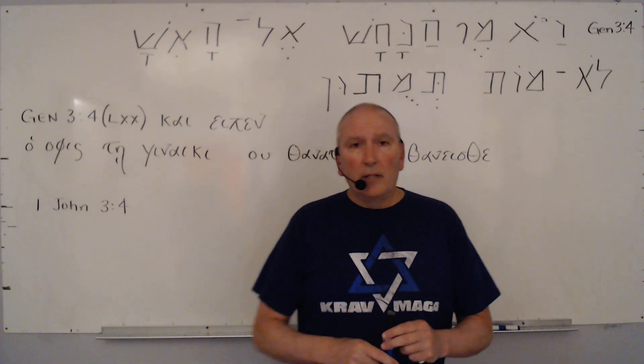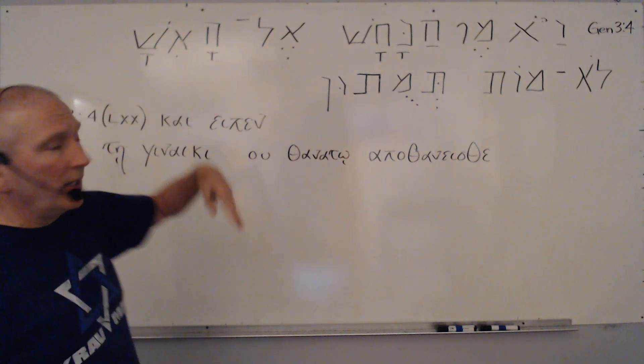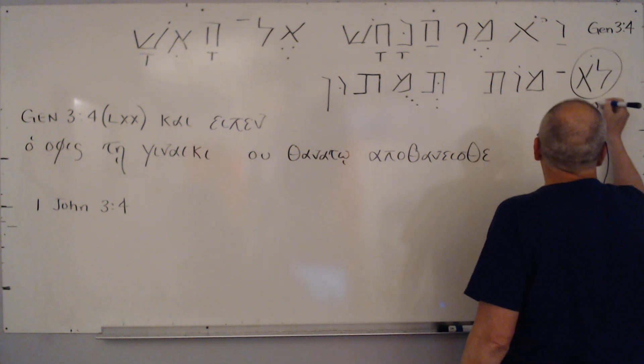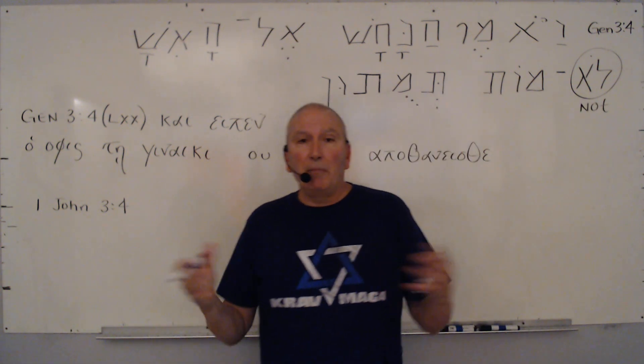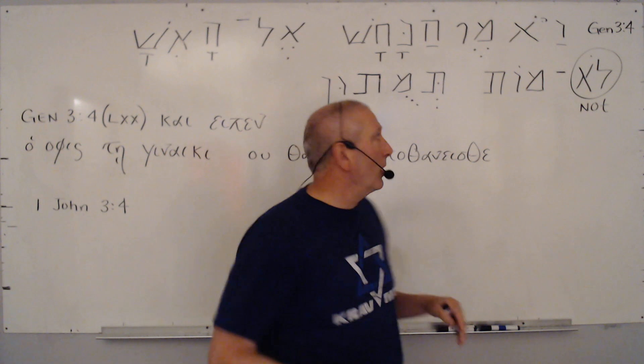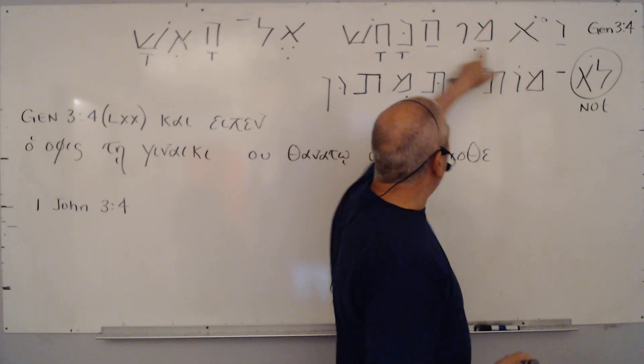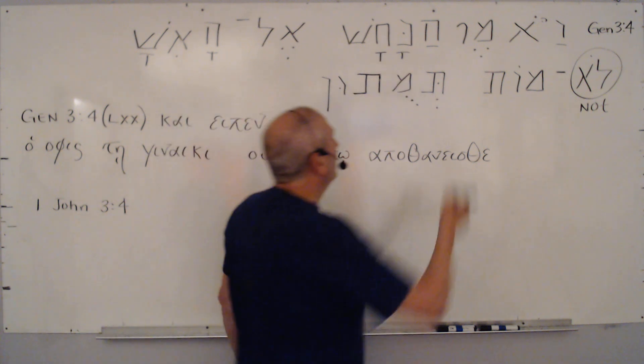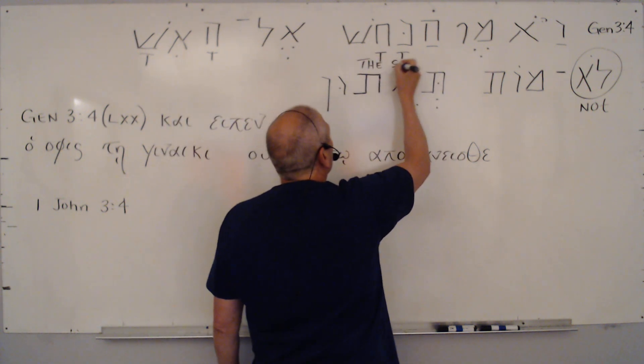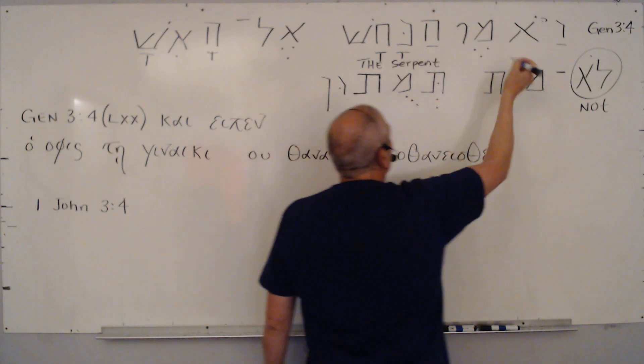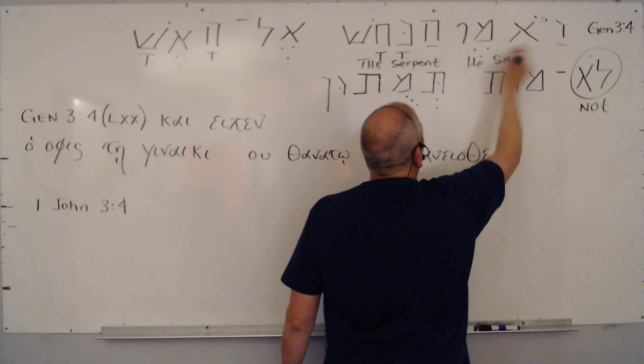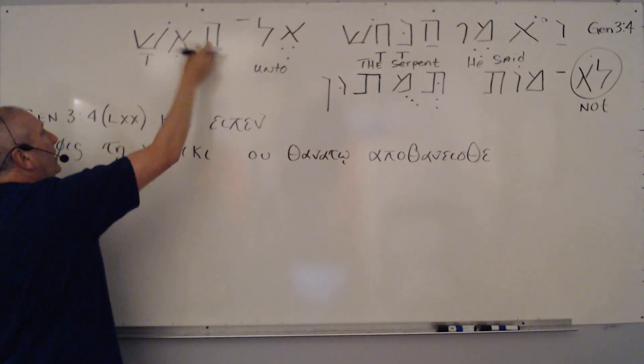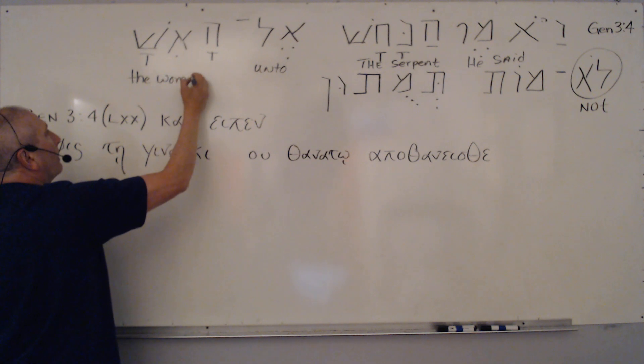Let's look at that real quick. First of all, here's Genesis 3:4. I'll show you what a negation of testimony is. This word 'lo' in Hebrew means not - it's a negative particle. The serpent said to the woman, 'Isha,' the woman...